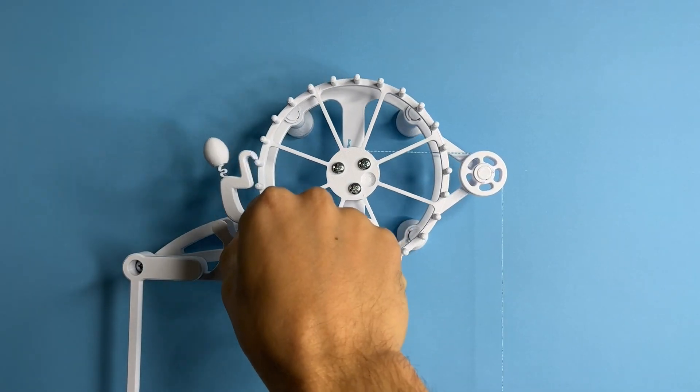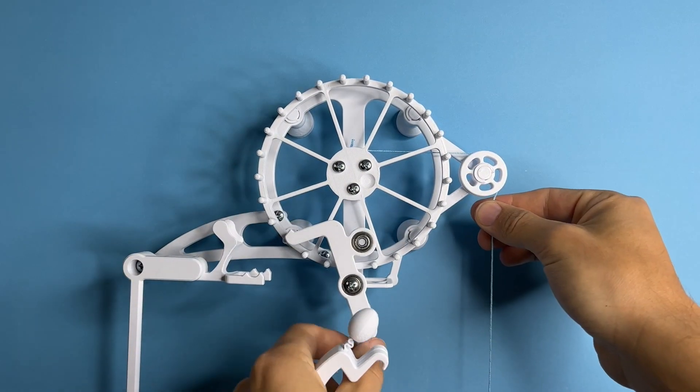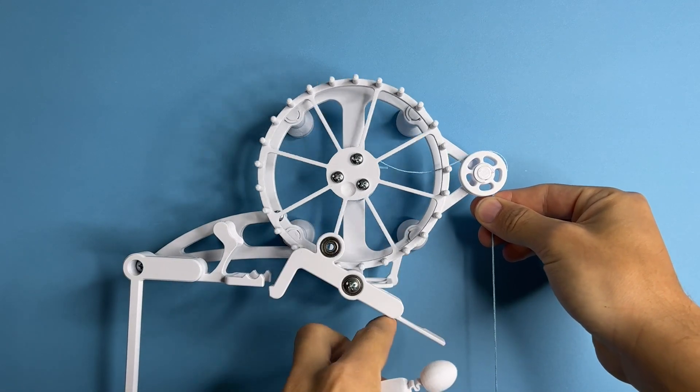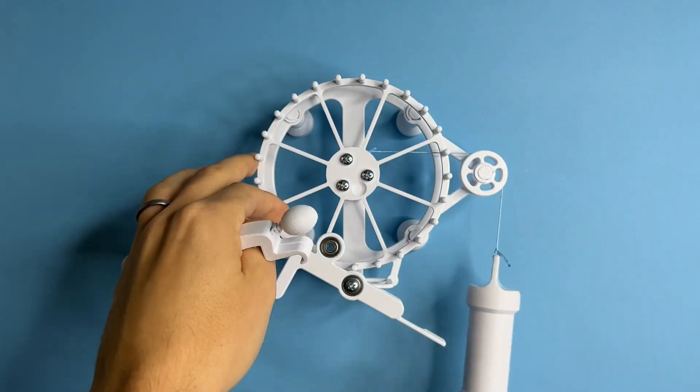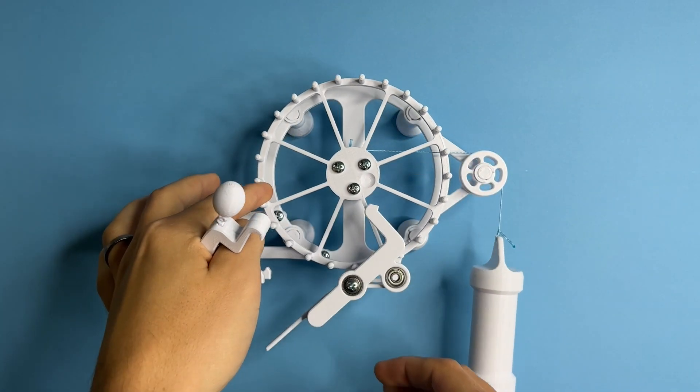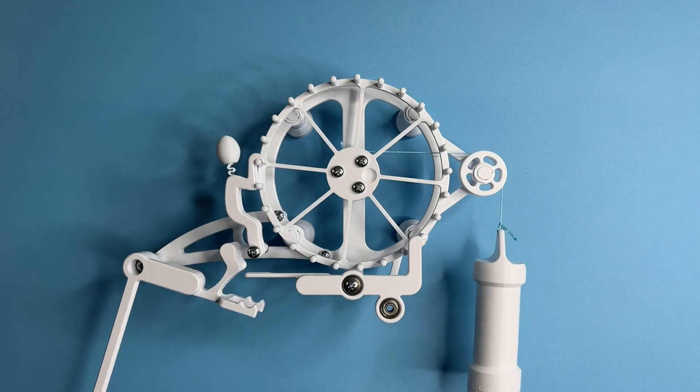To rewind the escapement, just remove Bob from his position. Flip the trigger into this position so the escapement wheel is completely free and then just rotate the escapement wheel until the weight's all the way up. Replace the trigger, put Bob back into position and you're good to go.